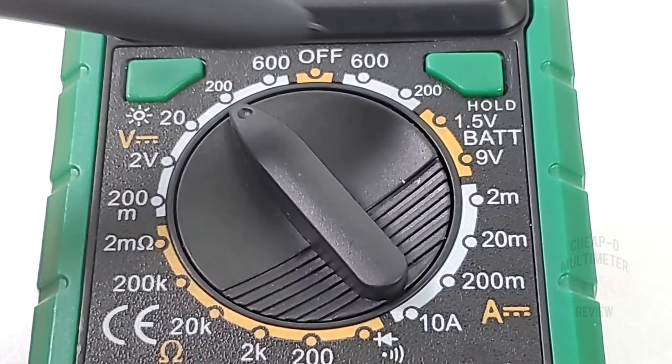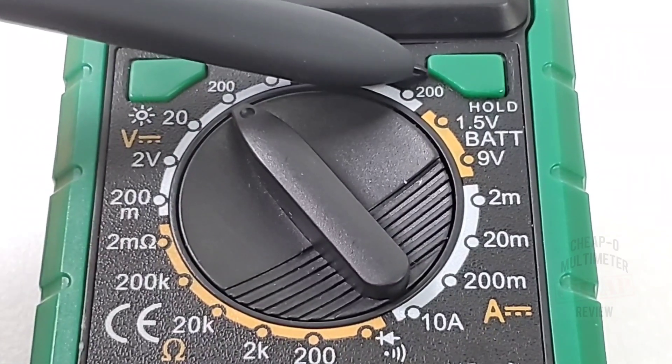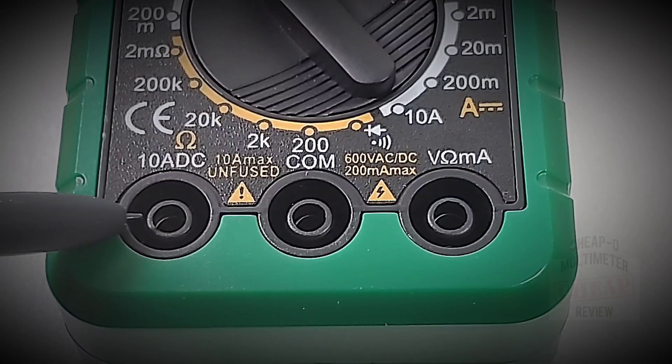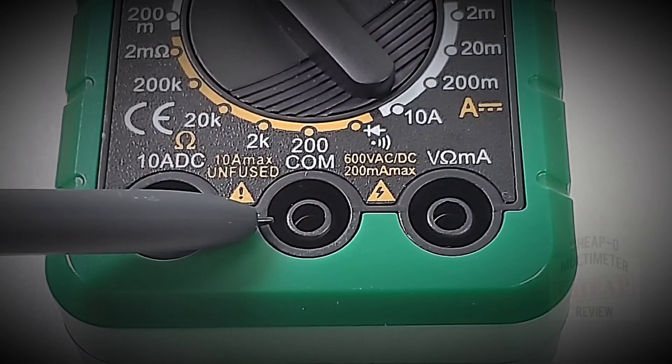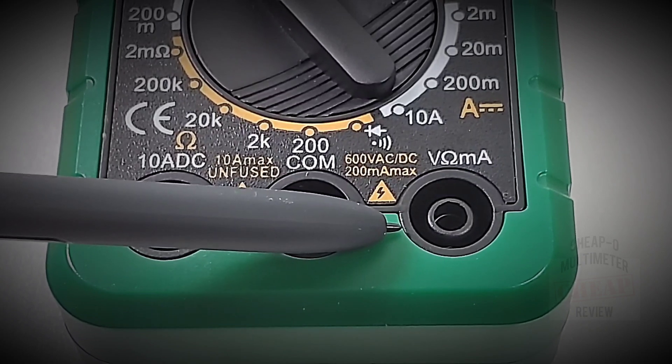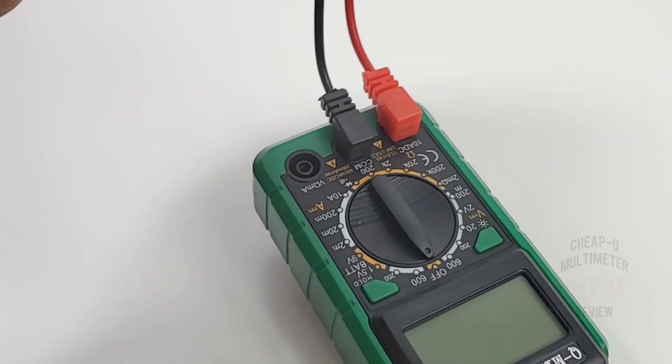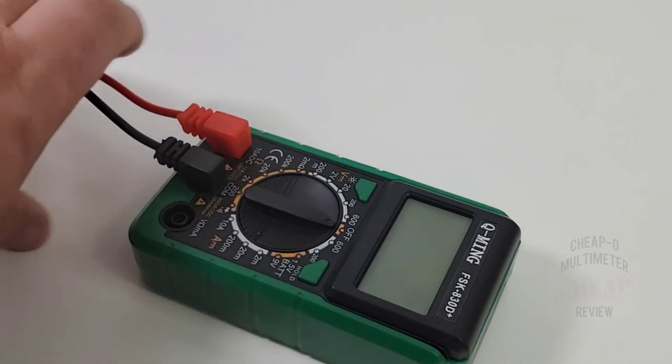Top left we have our backlight button and on the far right we have our hold, standard one touch. Below, our three input jacks: high current amps on the far left, our common or neutral in the middle, and finally on the far right our volts, resistance, and milliamps.